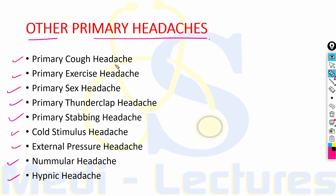Primary cough headache is a generalized headache precipitated by coughing, sneezing, straining or laughing. It can be seen with a Chiari malformation or any lesion causing obstruction to CSF flow. Treatment is indomethacin 25 to 75 mg TDS.